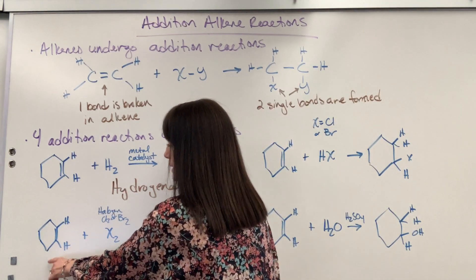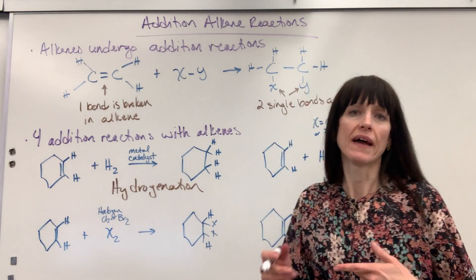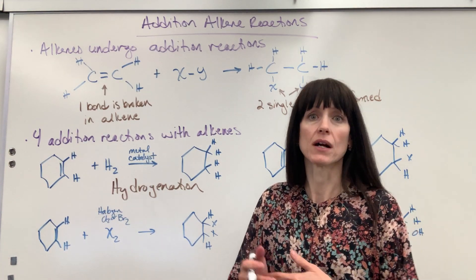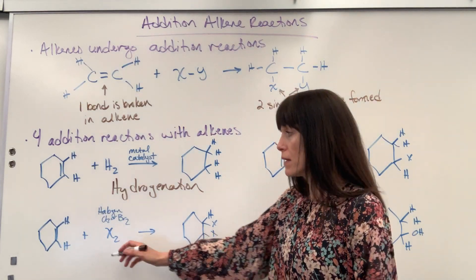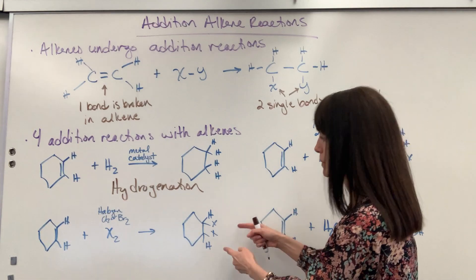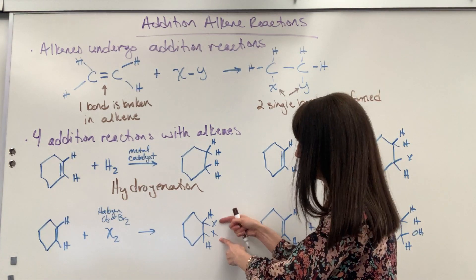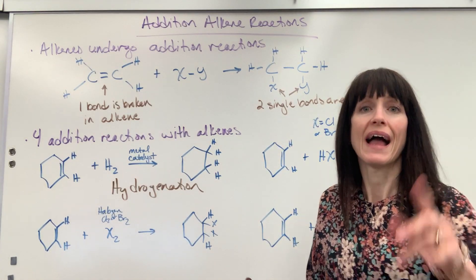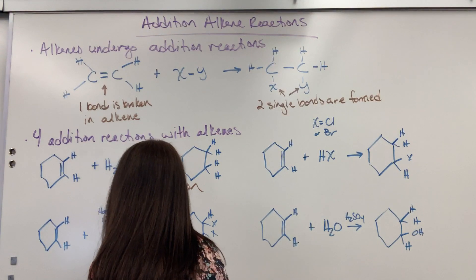We've got our cyclohexene and now we're going to add a halogen — the halogen is either going to be a chlorine or a bromine. That's what that X represents. That double bond is going to break, become a single bond, and we simply add in the chlorine or the bromine — so two chlorines there or two bromines there. And this is called halogenation.